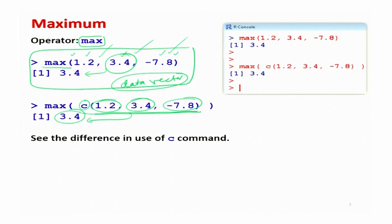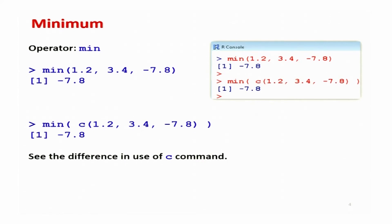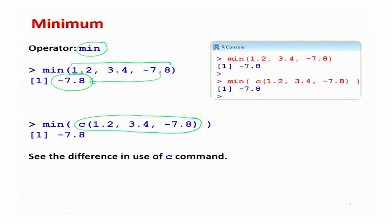Similarly, the command min is used to find the minimum value among given values. With numbers 1.2, 3.4, and minus 7.8, the minimum value is minus 7.8 — whether you use the data vector concept with c or simply give the values inside the parenthesis, the answer is the same minus 7.8. So for both maximum and minimum, the use or non-use of the c command does not affect the output.